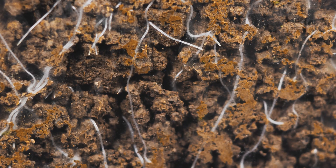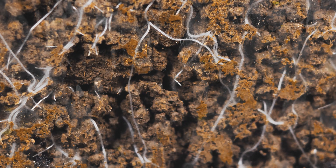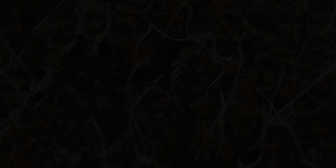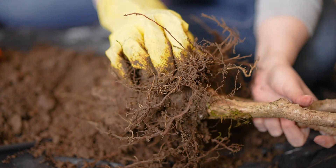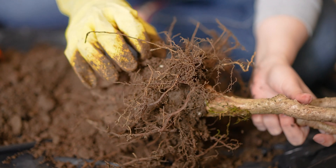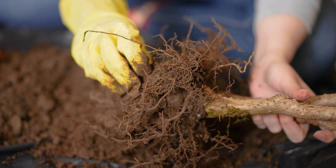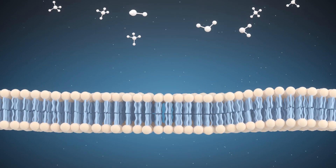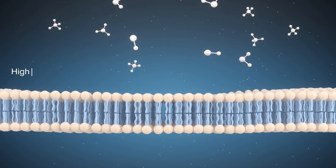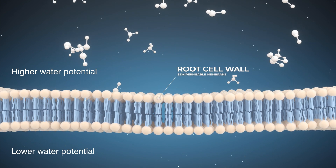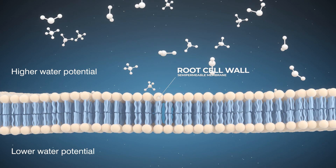Plants absorb water from the soil by a process called osmosis. In this process, water molecules move from the soil into the root cells via passive absorption. This occurs due to the difference in solute concentrations between the inside of the root cells and the outside soil solution. The water molecules move from the area of higher water potential to the area of lower water potential across a semi-permeable membrane, which is the cell's wall.